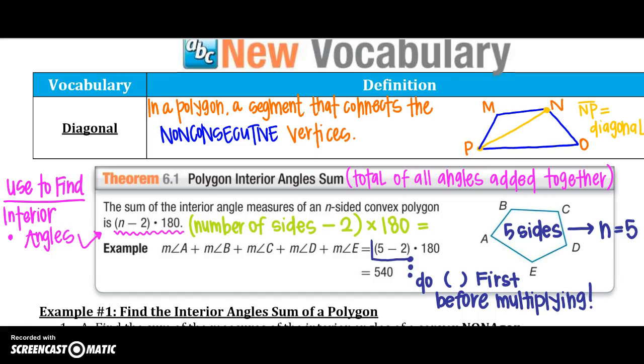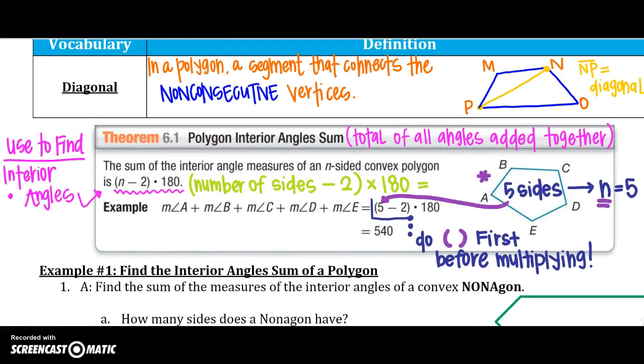The sum of the interior angles measures of an n-sided convex polygon is the number of sides minus 2, and then I'm going to multiply by 180. So notice in this diagram, this polygon has 5 sides, so n is going to be 5. So they would say 5 minus 2 times 180. And one thing that we need to remember is our order of operation. So we have to do our parentheses first. So it's really 3 times 180 degrees.